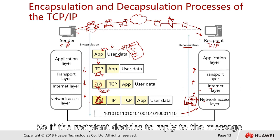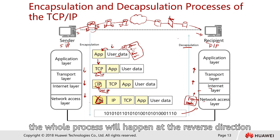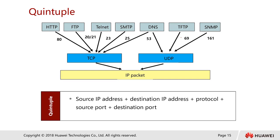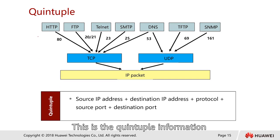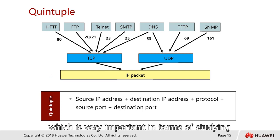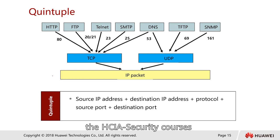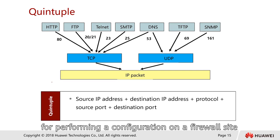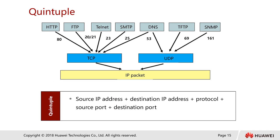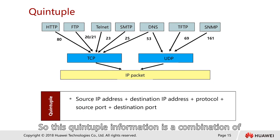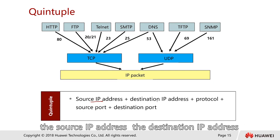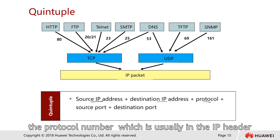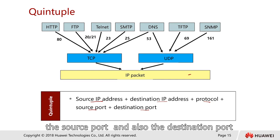If the recipient decides to reply to the message, the whole process happens in reverse. This is the quintuple information, which is very important when studying the HCI security course, especially when performing firewall configuration. The quintuple information consists of: source IP address, destination IP address, protocol number (usually in the IP header), source port, and destination port.